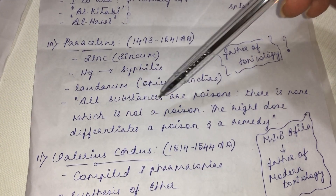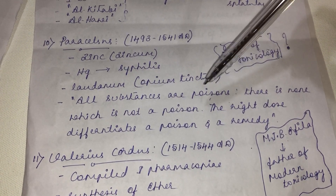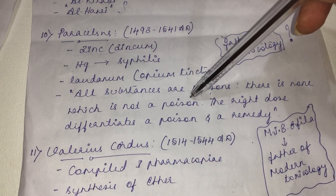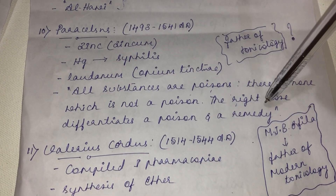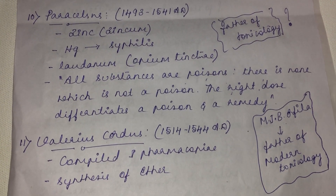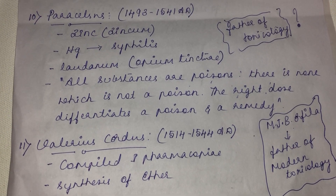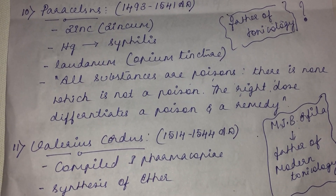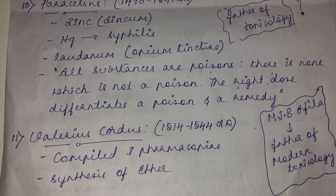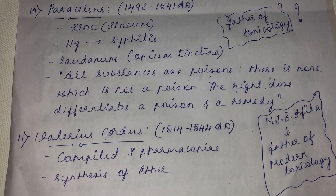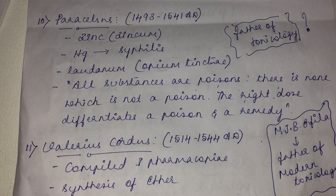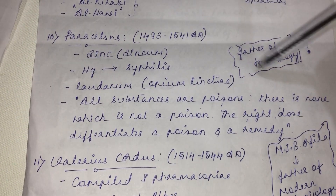Paracelsus gave the famous statement: 'All substances are poisons; there is none which is not a poison. The right dose differentiates a poison from a remedy.' For example, paracetamol at the proper dosage suppresses fever, but an overdose leads to adverse effects such as gastric bleeding. This famous statement on the dose-response relationship was given by Paracelsus.